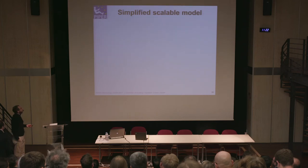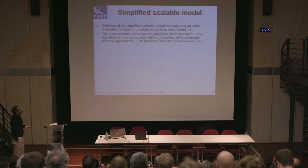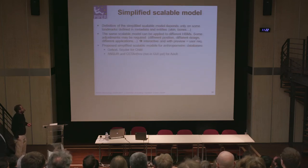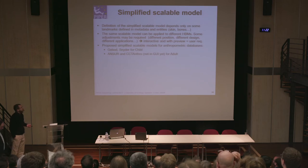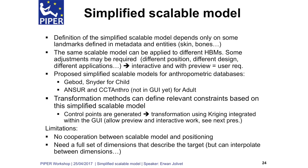So we can combine several tools of targets into one full target set, and the scalable model can be adapted very easily from one model to another — it's just a matter of landmark. The same model can be applied on different datasets. In this paper, we provided the scalable model for J-BOT, Snyder, for child, for ANSUR, for adult. And the transformation method can define some relevant information to drive the transformation for meshing or other numerical methods.